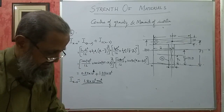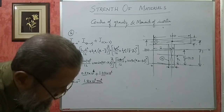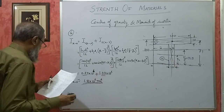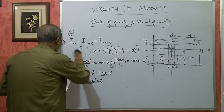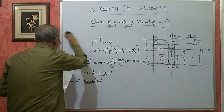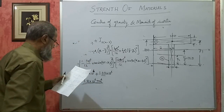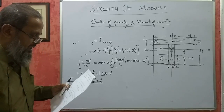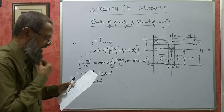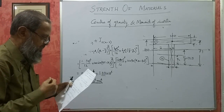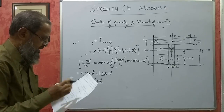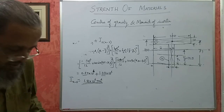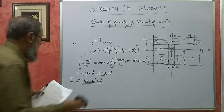The second problem taken is problem number 6 from the question bank: find the CG of an L-section and the moment of inertia of the section through the CG and parallel to the shorter leg.